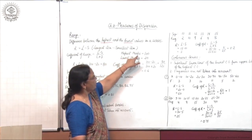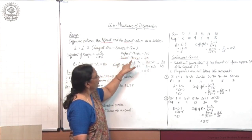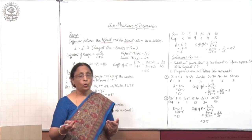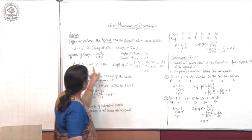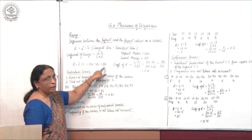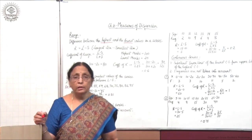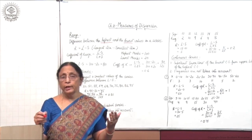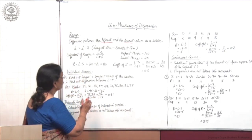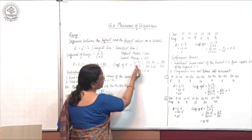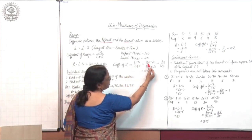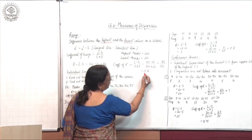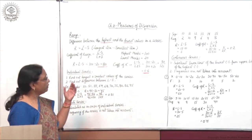For example, suppose the highest marks in a class are 100 and the lowest marks are 20. Range = L minus S = 100 minus 20 = 80. So marks are ranging between 20 to 100, and the range is 80. Coefficient of range = 80 upon 120. Very simple to calculate.